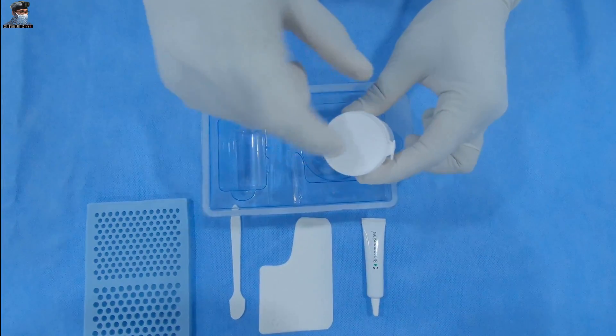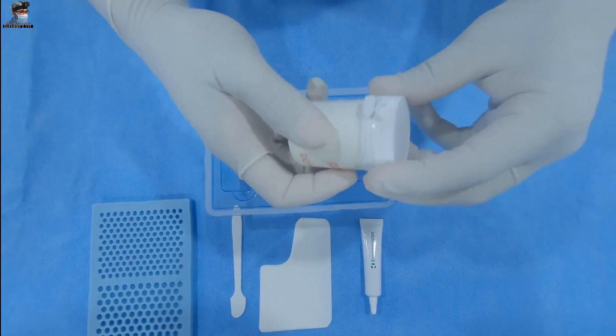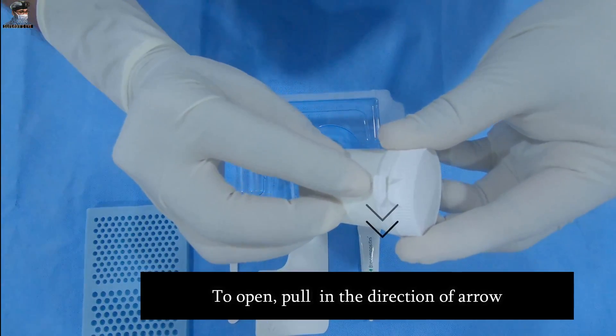Gently tap the pot containing the Stimulan Rapid Cure powder and empty the powder into the sterile mixing bowl provided.